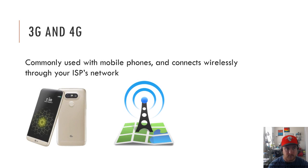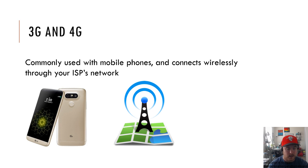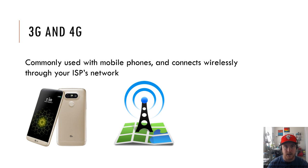Lastly we have 3G and 4G, commonly used with mobile phones, which connects wirelessly through your internet service provider's network. Remember, if your internet ever goes down at your house, that shouldn't affect your cell phone. If you have your cell phone connected to Wi-Fi it'll disrupt that signal, but if you disconnect from Wi-Fi you'll still be able to have internet on your phone even if your home internet goes down.